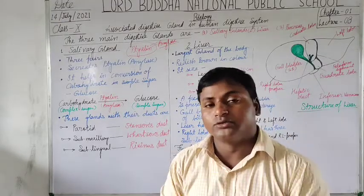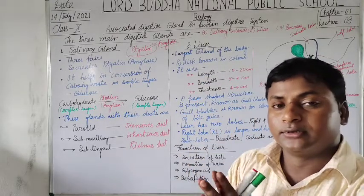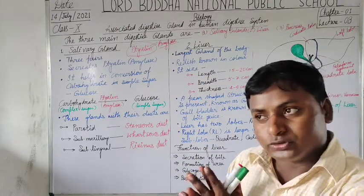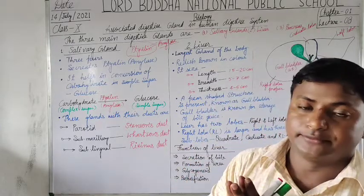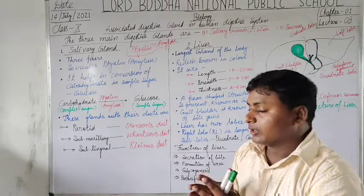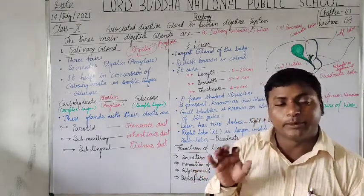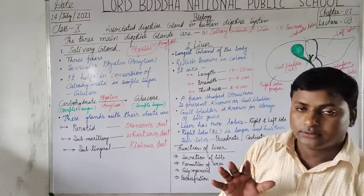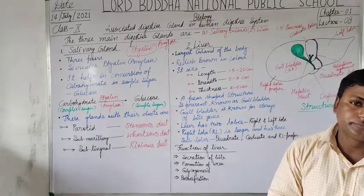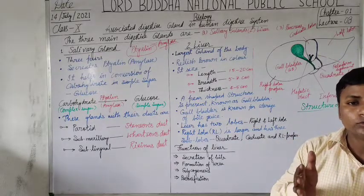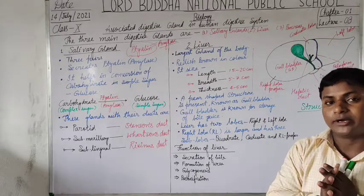Bile juice is stored in a pear-shaped associated body called the gallbladder, with the help of a duct called the hepatic duct. The liver is divided into two lobes — it has two main parts. The first one is the right lobe and the second one is the left lobe.